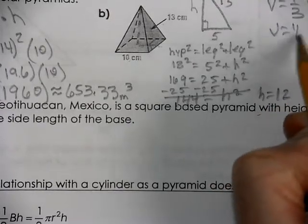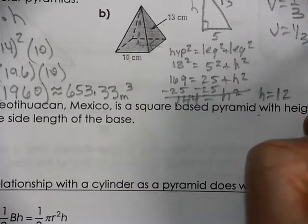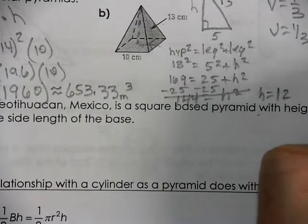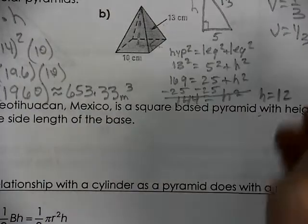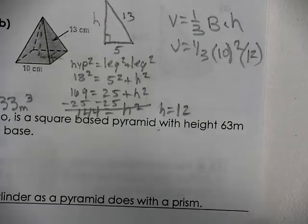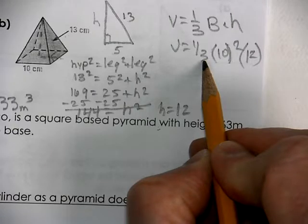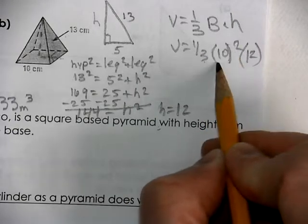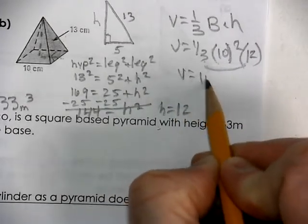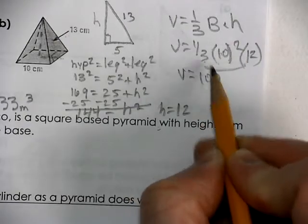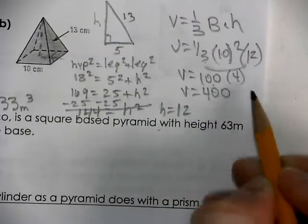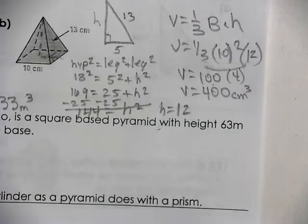Now we're ready to find the volume: one-third times the base times the height. The base is 10 times 10 and the height we determined is 12. We can take one-third of 12 to get 4, so the volume is 10 times 10 times 4, which equals 400 cubic centimeters.